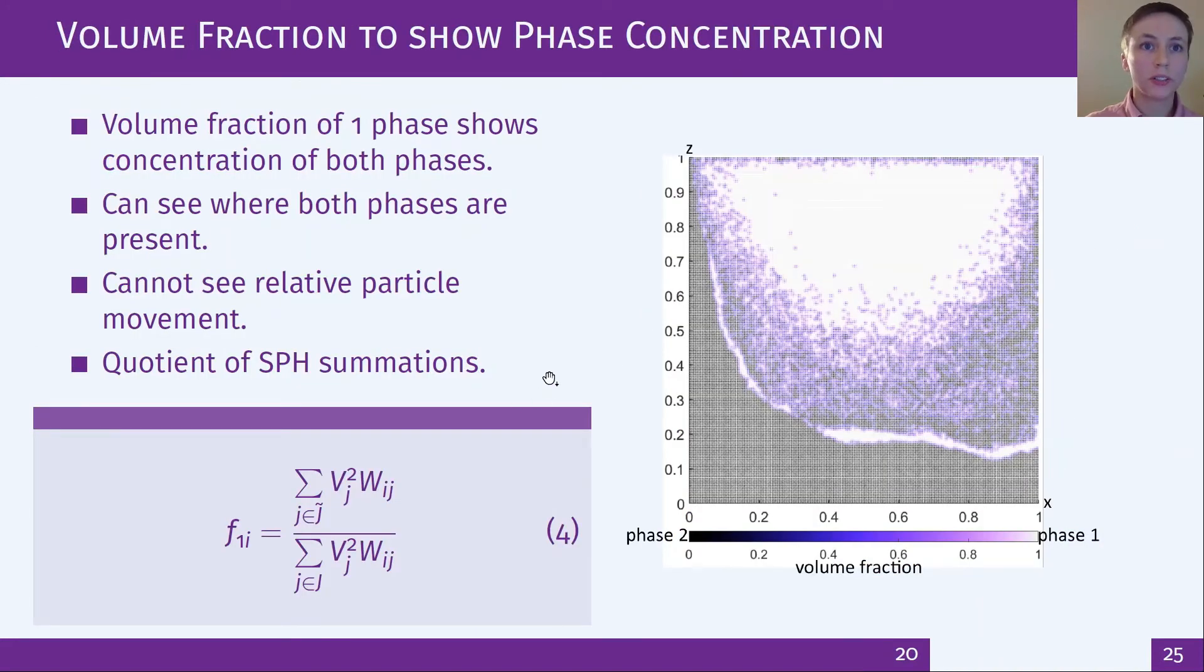First up is the volume fraction which gives easy comparisons with say the volume of fluid method. You can see here where either a single phase or both phases are present but you can't see the relative movement of particles.